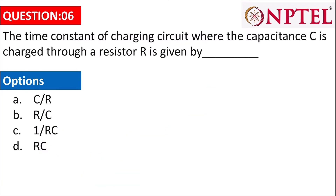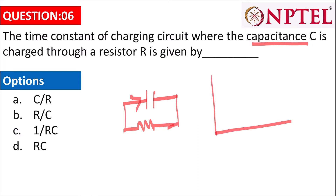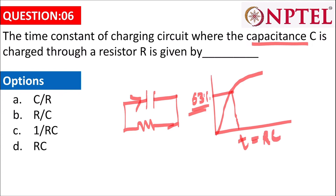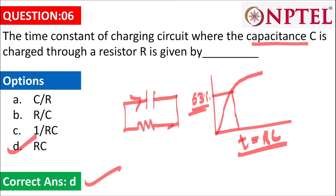The next question asks for the time constant of a charging circuit where a capacitor C is charged through a resistor R. As the capacitor charges, the voltage follows a curve, and 63 percent charging occurs at time t. The time constant is defined as the time at which the capacitor is charged up to 63 percent. This time constant equals RC. So the answer is D.